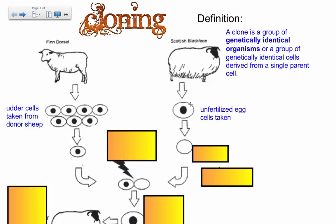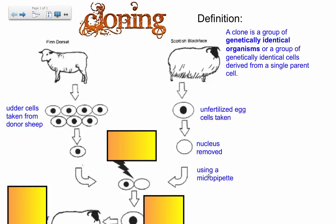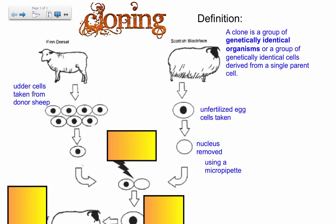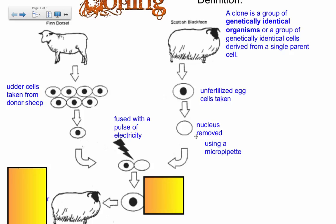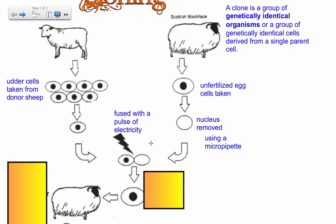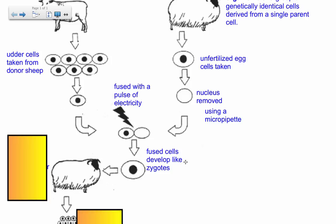We're going to modify this egg cell because it has a lot of goodies inside — plenty of cytoplasm with nutrients and organelles. We modify it by removing the nucleus using a micropipette. On the experimental side, we take adult udder cells from a donor sheep. These udder cells are already differentiated — already functioning as udder cells, not embryonic cells. We take one adult cell and fuse it together with this empty egg cell using electricity, creating a hybrid fused cell.